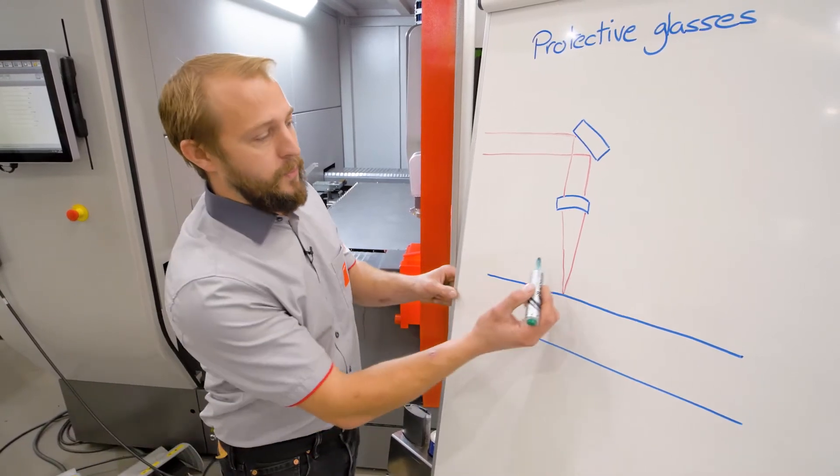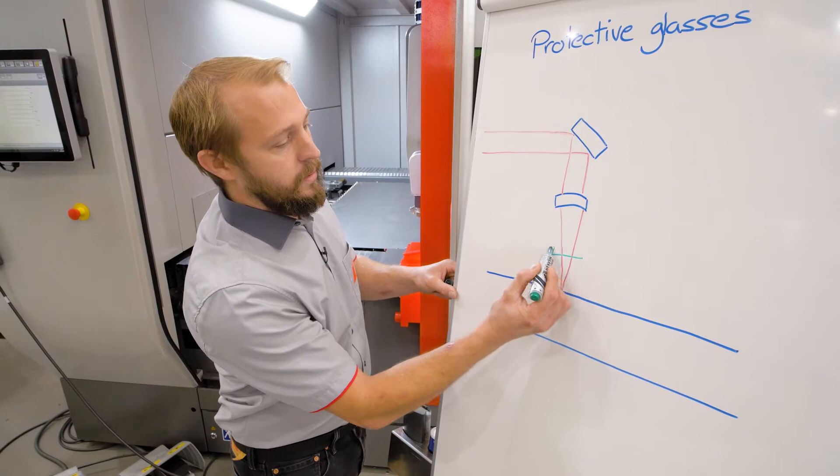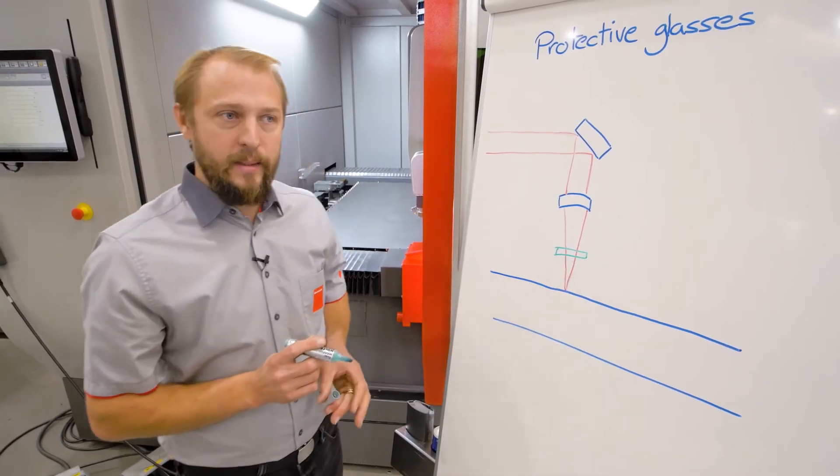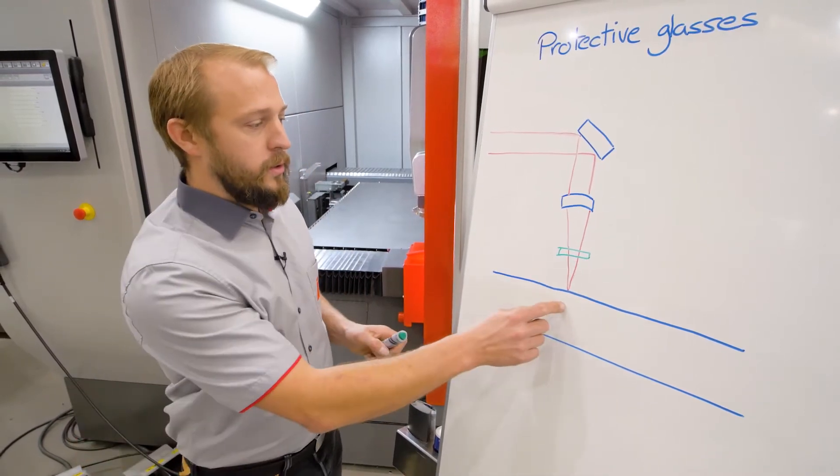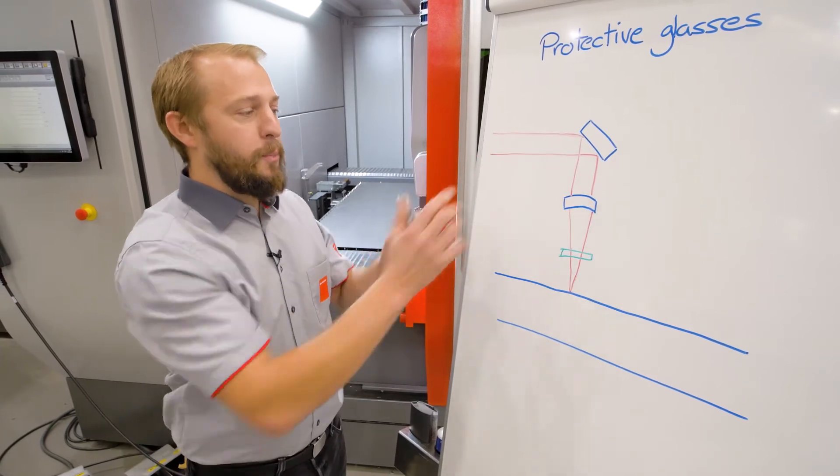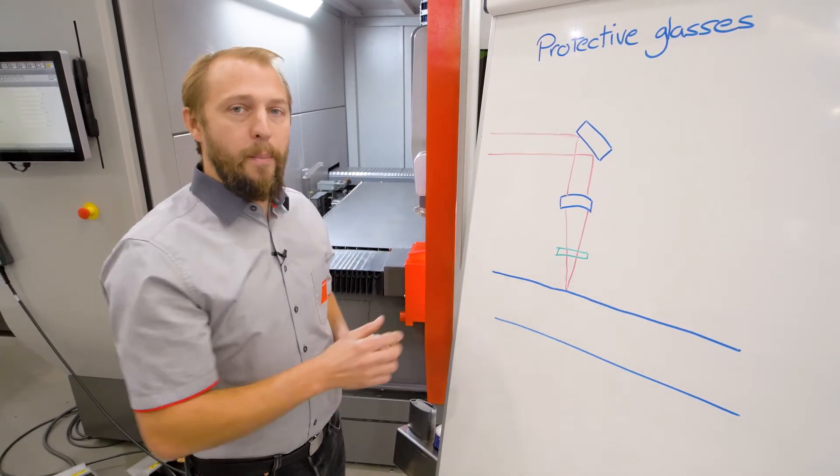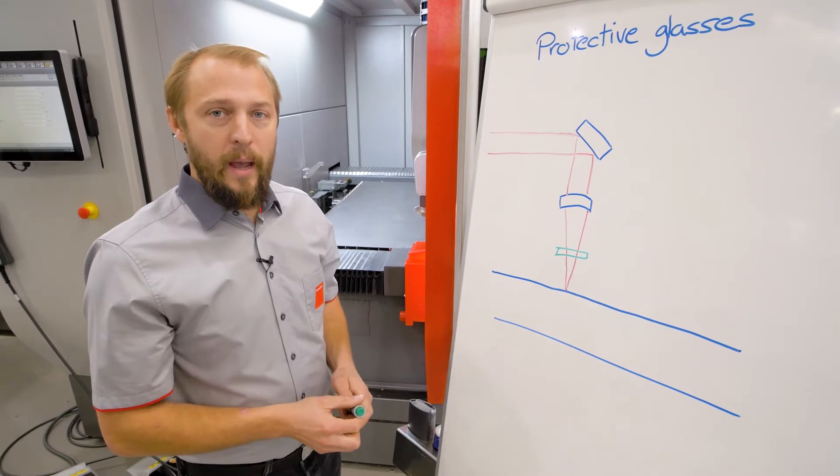To avoid that, we added here a protective glass. Now the dirt will go on this protective glass and protect our optical room. This is a wear part that you have to replace from time to time.